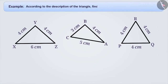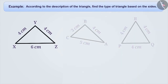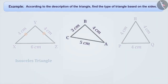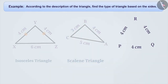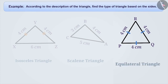According to the description of the triangle, find the type of triangle based on the sides. From the description provided for triangle XYZ, we understand that the length of side XY and side YZ are equal, but the length of the third side XZ is different. Therefore, we will call this triangle an isosceles triangle. From the description provided for triangle ABC, we understand that the lengths of the three sides are not equal. Therefore, we call such a triangle a scalene triangle. From the description provided for triangle PQR, we understand that the lengths of all three sides are equal. Therefore, we call such a triangle an equilateral triangle.